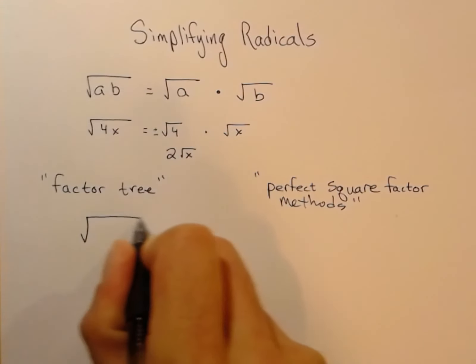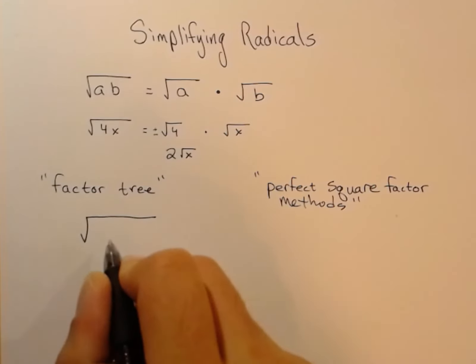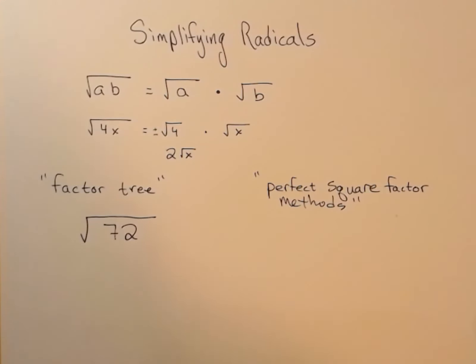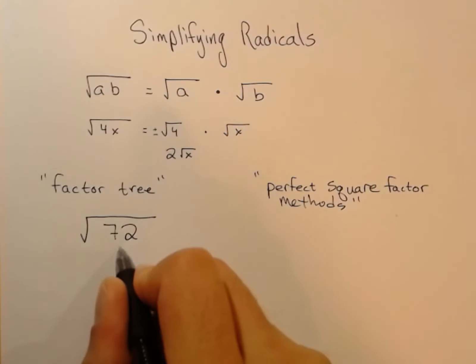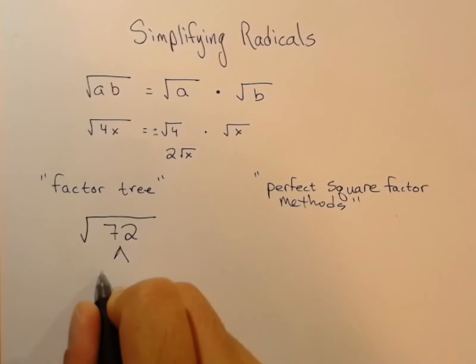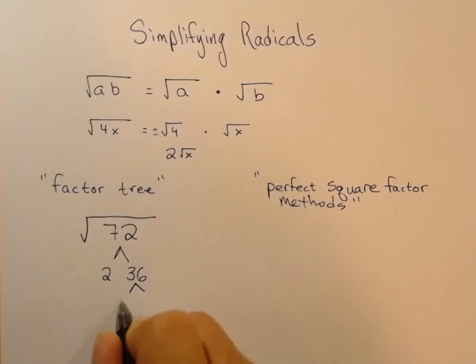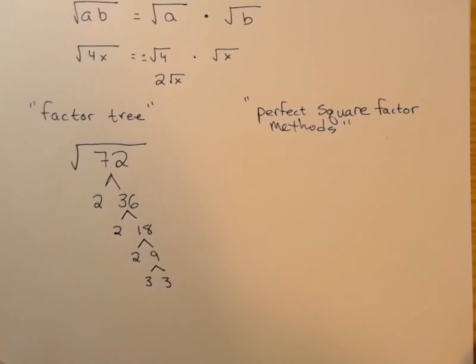Basically, if you have a number under a square root that is not a prime number, like the square root of 72, you can break the number 72 up like a little factor tree. 72 is 2 times 36. 36 is 2 times 18. 18 is 2 times 9.